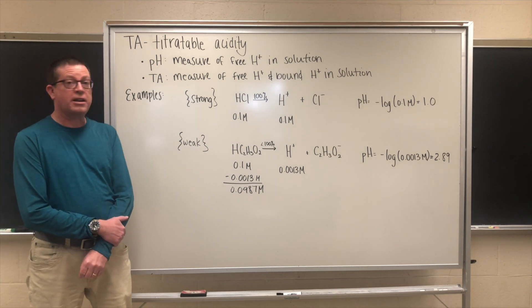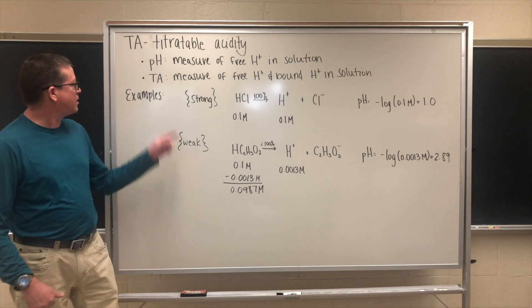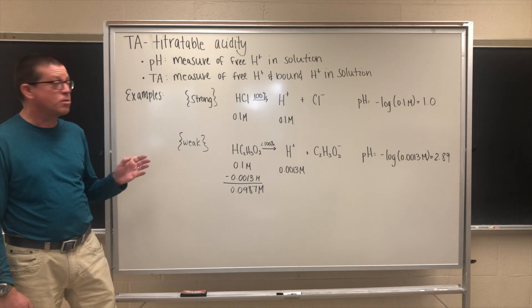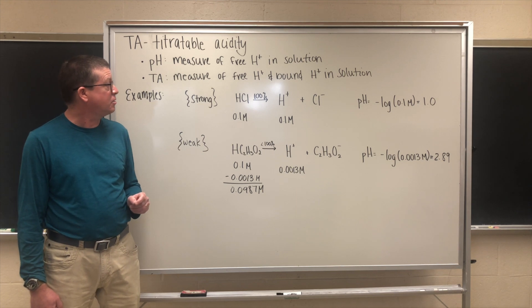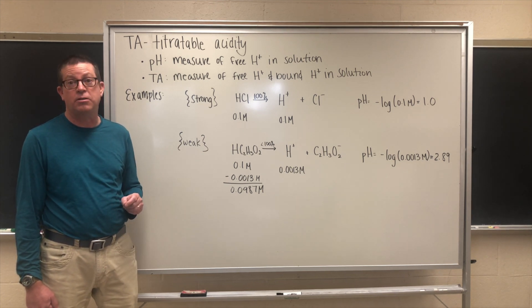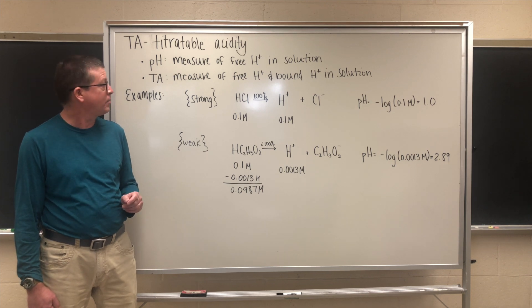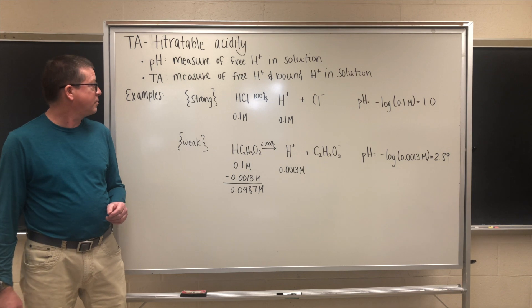As a quick review, pH is a measurement of the free hydrogen ion provided by an acid in solution, whereas titratable acidity is a measure of both the free hydrogen ion in solution and the bound hydrogen ion still associated with an organic acid. That's the kind we find in kombucha, so that's why we care about it.